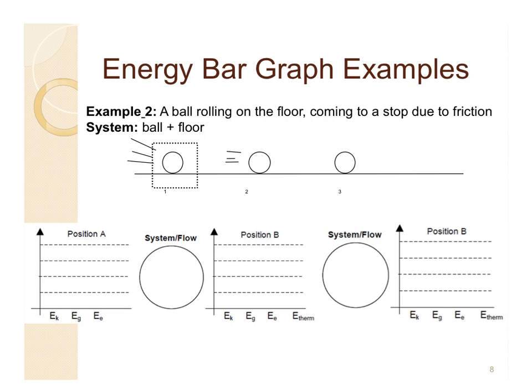Now we'll look at one more example. The system has again been defined for you: the system is the ball plus the floor. The ball is going to roll along the floor and eventually come to a stop due to friction — that's going to be important. We've identified our system as the ball and the floor, and we'll write that in the circle to represent what's in bounds for this problem.